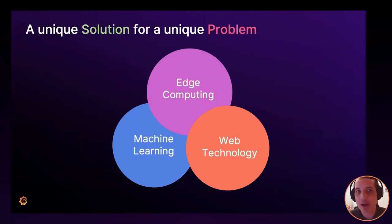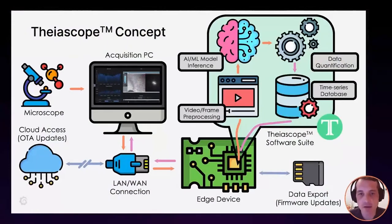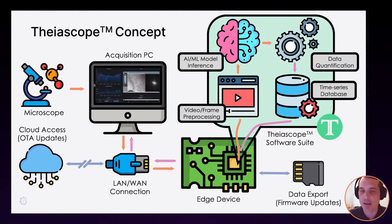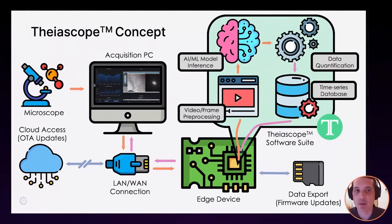This unique problem requires a unique solution. We're going to combine edge computing devices with machine learning and web technologies to gain the advantages of cloud infrastructure familiarity while operating in closed environments. From this unique solution, we have our Theoscope concept: an edge computing device running our models to automate quantitation of black dots in images, storing data in a time-series database on the device. It connects to the microscope and acquisition PC via local area network or USB. Where internet access is available, we can use additional cloud computational resources and do over-the-air updates.